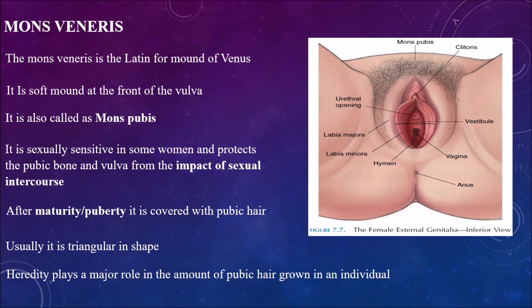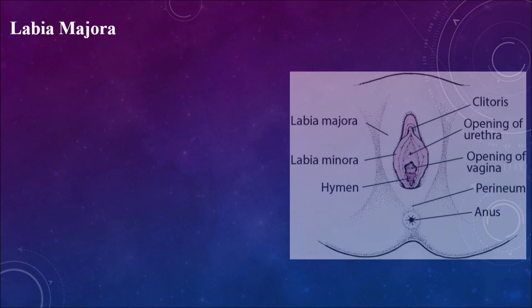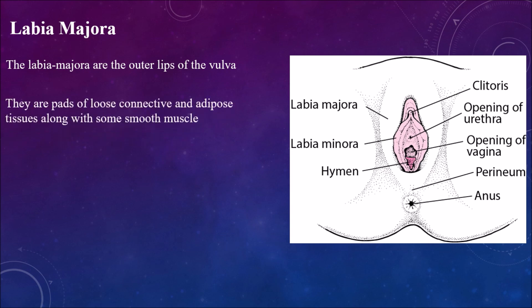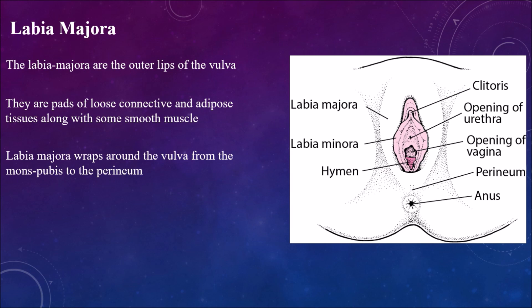Labia majora are the outer lips of the vulva. They are made of loose connective and adipose tissue along with some smooth muscle. The labia majora wrap around the vulva from the mons pubis to the perineum — they provide a covering over the entire vulva from top to bottom.